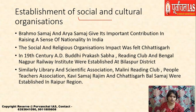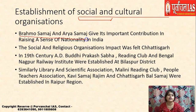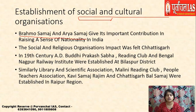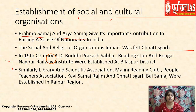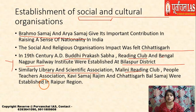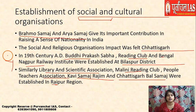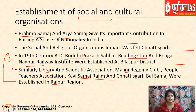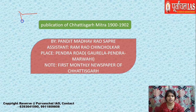During the 19th century, many social and cultural organizations emerged, such as Brahmo Samaj, which brought changes like abolition of sati and widow remarriage. Their effect was felt in Chhattisgarh too. Organizations established in Chhattisgarh included Buddhi Prakash Sabha, Reading Club, Bengal Nagpur Railway Institute in Bilaspur, Library and Scientific Association, Malini Reading Club, People's Teacher Association, Kavi Samaj Rajim, and Chhattisgarh Bal Samaj in Raipur. These were established to raise the sense of nationality.